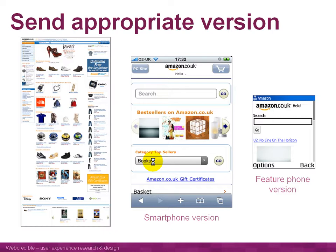If someone comes on a smartphone, send them the version designed for smartphones. Here you can be a little more generous — providing more information and larger, nicer images for a better browsing experience. By having these three different versions, you'll be able to reach the broadest customer base possible, and more people will be able to see your products online using a mobile phone.